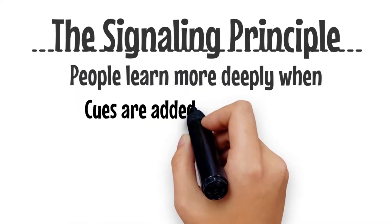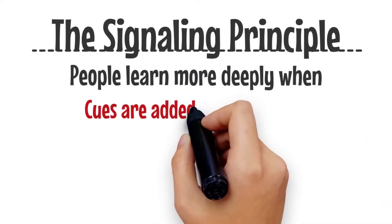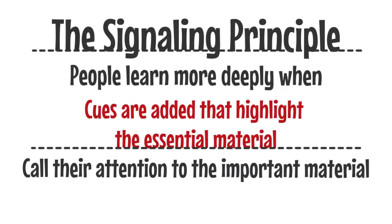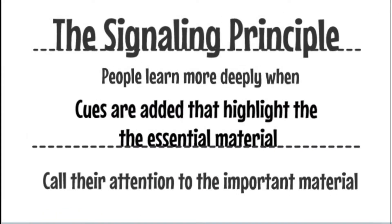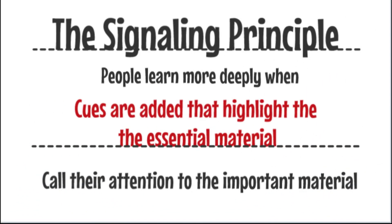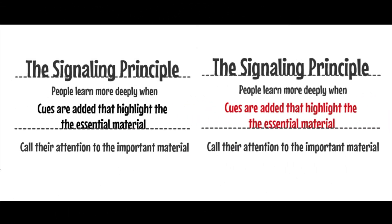Now let's begin with the easiest one, the signaling principle. People learn more deeply when cues are added that highlight the essential material, because it will call their attention to the important stuff so that they can learn more effectively. Even for this definition within 10 seconds, after changing the key sentence into red, this little behavior has made a big difference, which can make us understand the principle in a much clearer way.